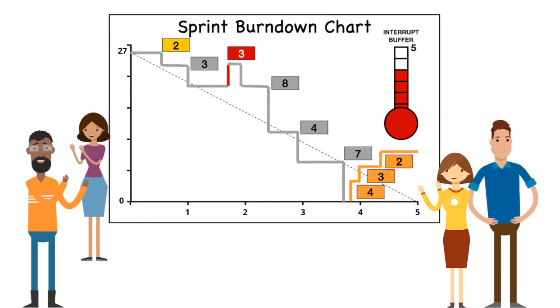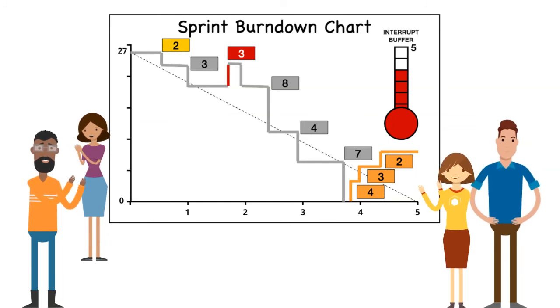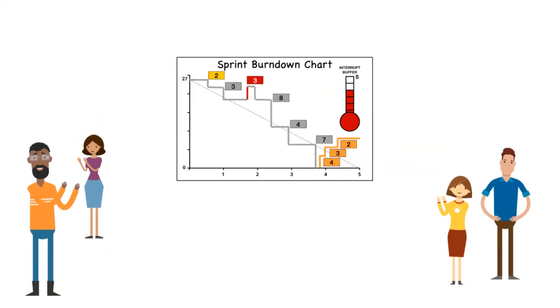Burndown charts give us a quick visual of the sprint progress so that all interested parties can see how much work is left remaining for the team to meet the sprint deliverables of that given sprint.